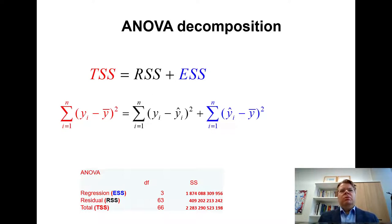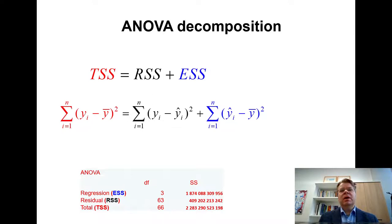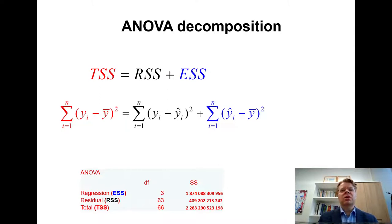One more point: if you think about the formula for sample variance and divide the Total Sum of Squares by n minus 1, you get the sample variance of the dependent variable Y. So this ANOVA decomposition is essentially breaking down the sample variance of Y into two parts. This is why it is called analysis of variance — it is the sample variance that we are breaking down.